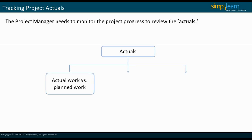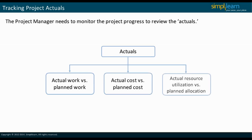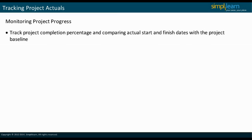The term actuals refers to the actual work that has been done compared to the planned work, the actual cost versus the planned cost, and actual resource utilization versus planned allocation. A project's progress can be monitored by tracking the project completion percentage and comparing the actual start and finish dates with the project baseline.